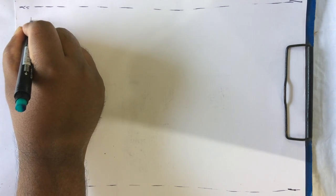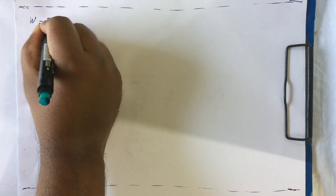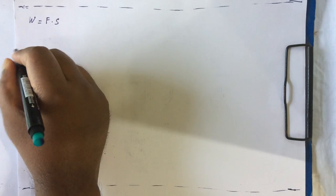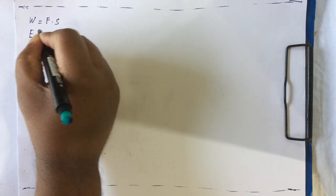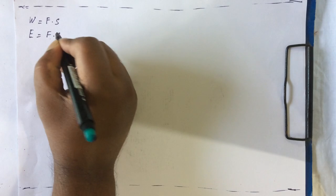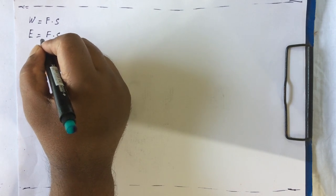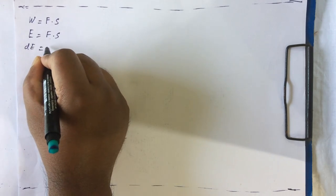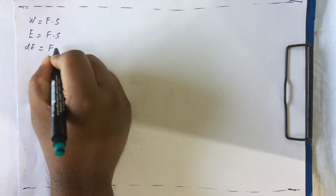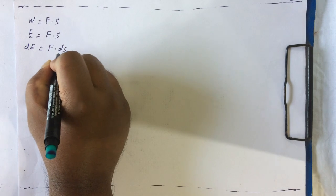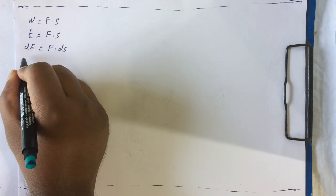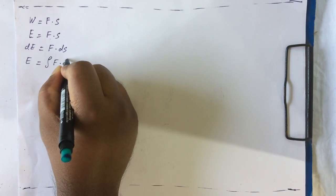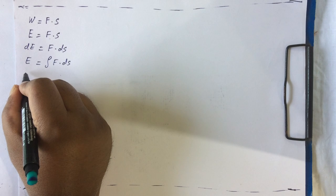To start with, we know that work is force multiplied by distance. You can also say that energy is force multiplied by distance. We want to take the change in energy — we can say that delta E is F dot ds, force applied over the distance moved. So energy will be the integral of F dot ds.